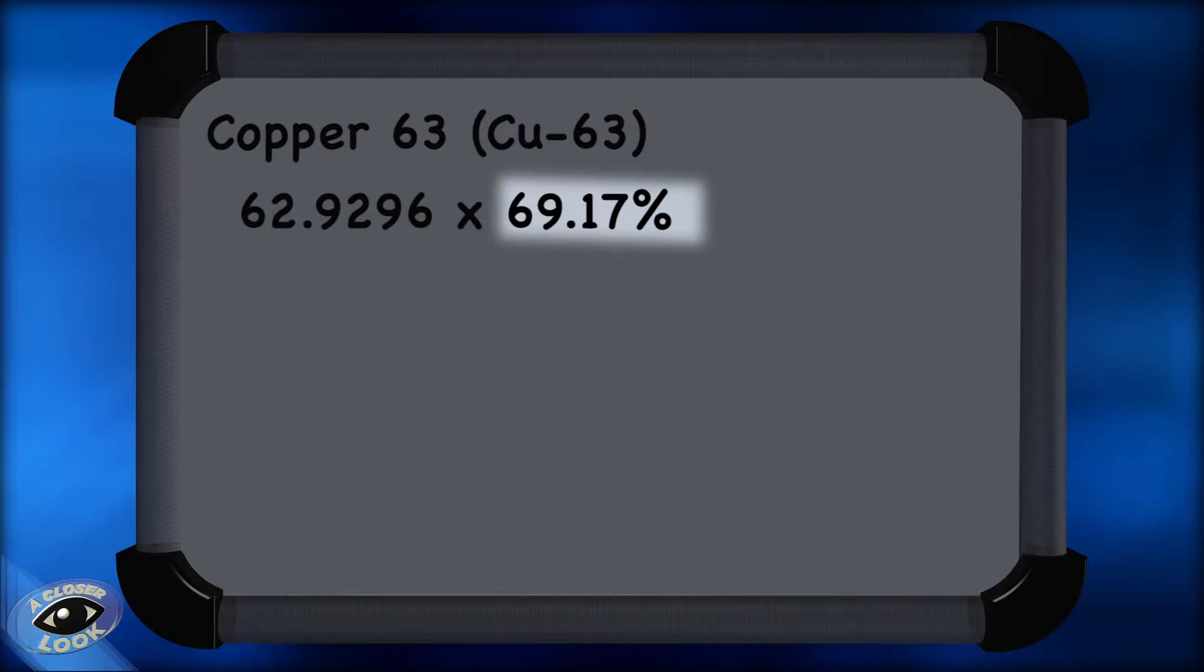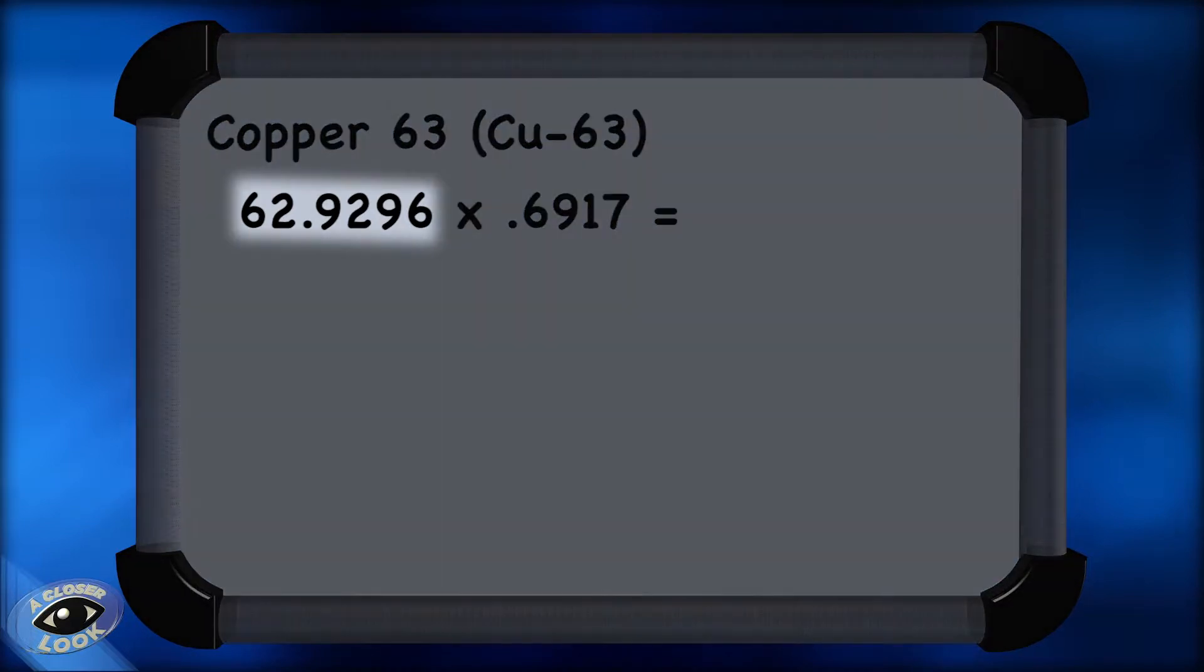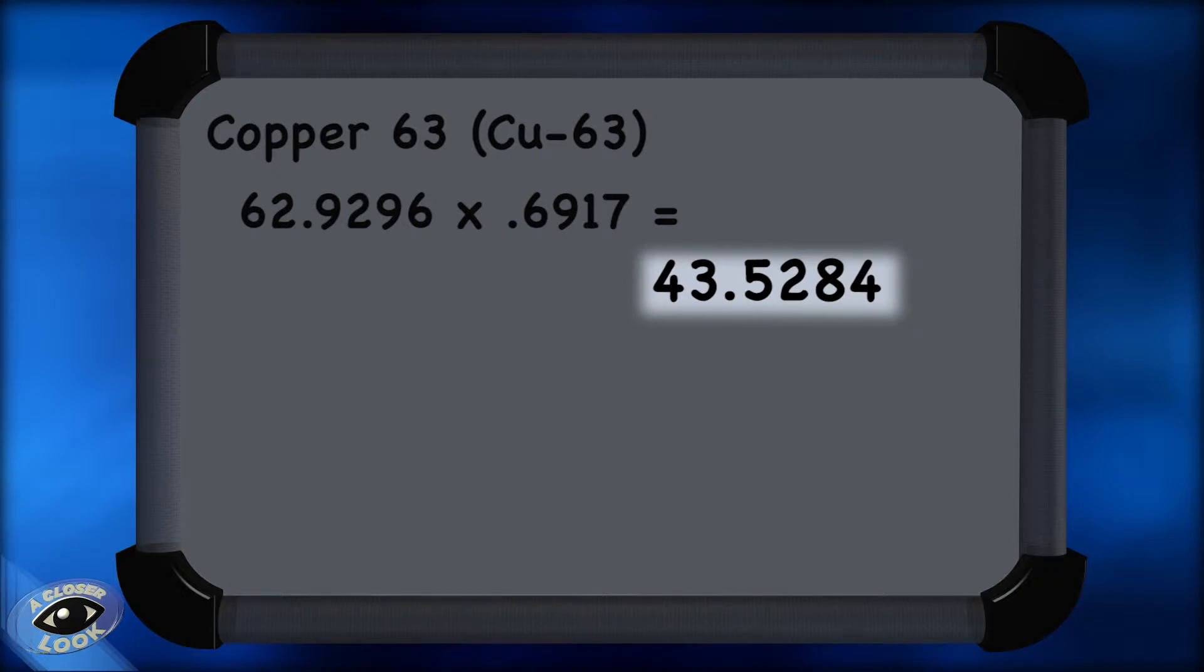We can always convert a percentage to decimal form by simply dividing that percentage by 100. And a shortcut for doing that division is simply moving the decimal two places to the left. So we take the 69.17% and rewrite it as .6917, and then multiply that times the exact mass of the isotope, 62.9296 AMU. That gives us 43.5284.